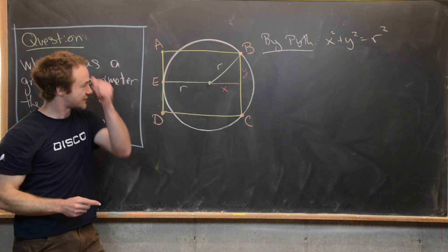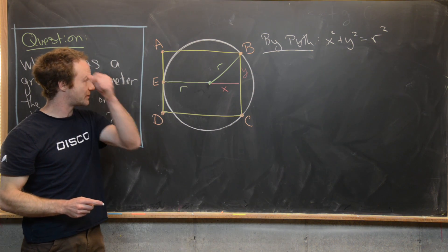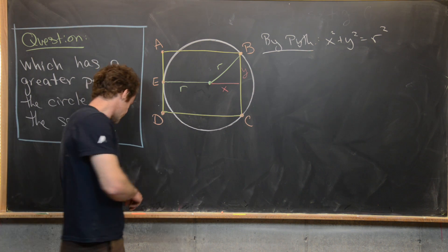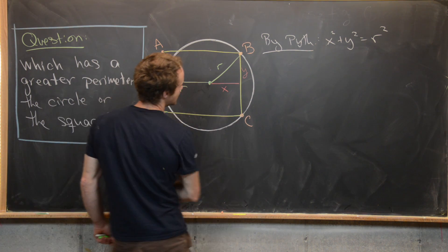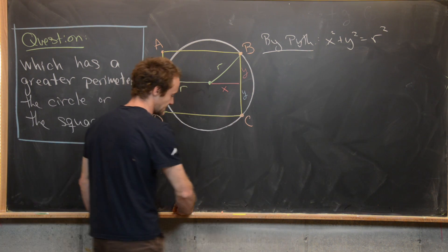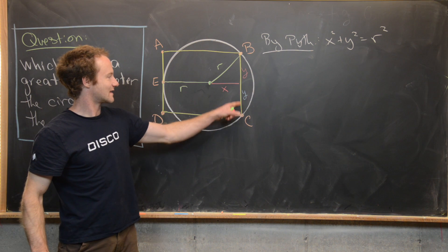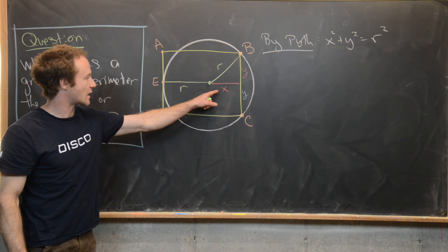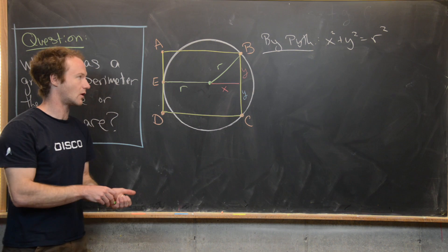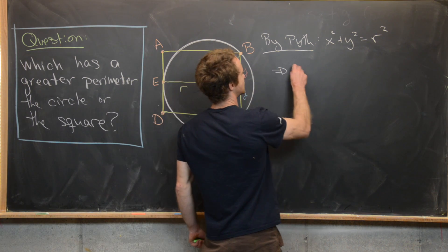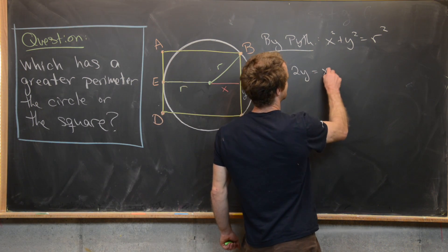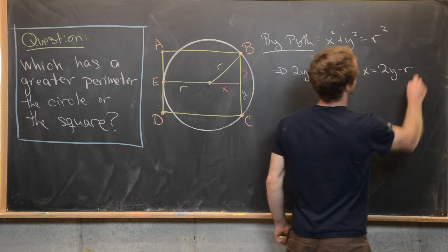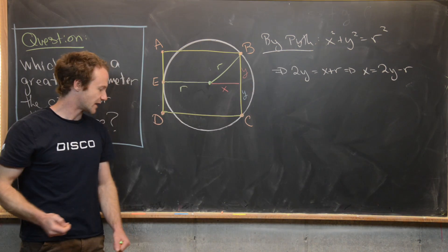And then another thing that we know is the relationship between Y and R and X. Notice that if we put another value of Y down here, we see that the side length of the square is 2Y, but the side length of the square is also X plus R. So that tells us that 2Y equals X plus R. In other words, X equals 2Y minus R.